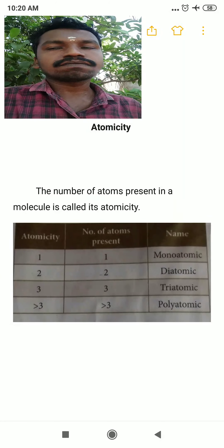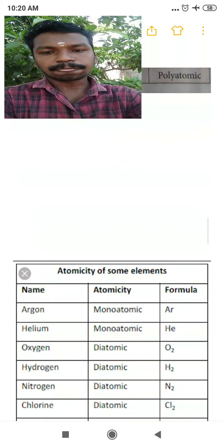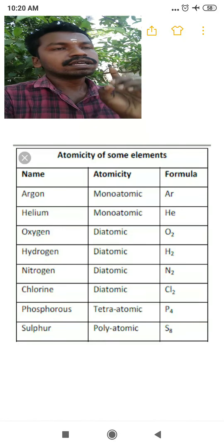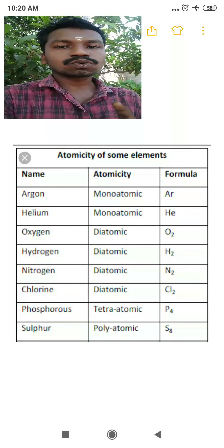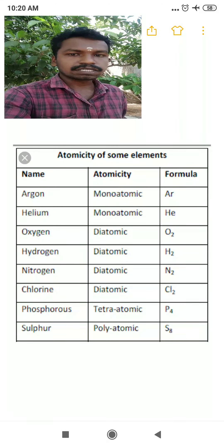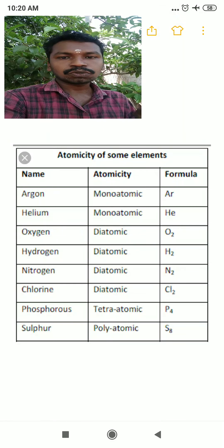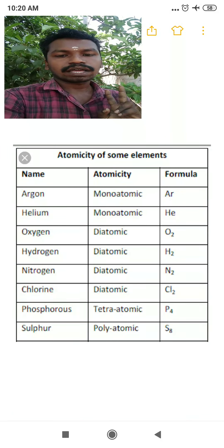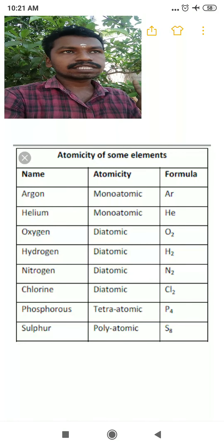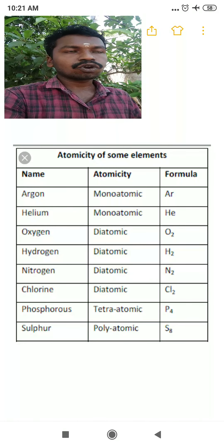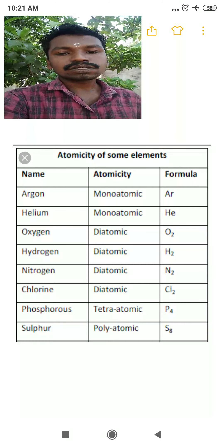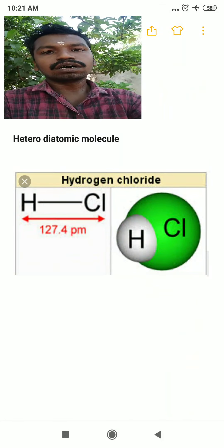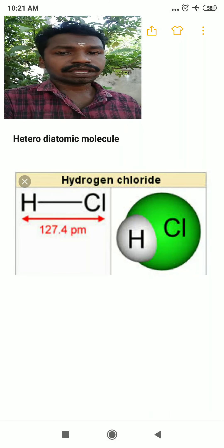Examples of atomicity: argon is monoatomic because noble gases never form compounds. Helium is also monoatomic. Oxygen (O₂) and hydrogen (H₂) are diatomic; nitrogen (N₂) and chlorine (Cl₂) are also diatomic. Phosphorus (P₄) has atomicity 4 — it can be called tetraatomic or polyatomic. Sulfur (S₈) has more than three atoms, so it is polyatomic.